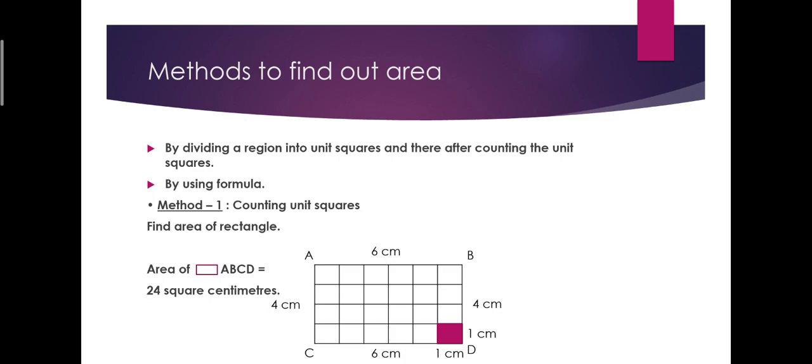Area of rectangle ABCD equals six centimeters length and four centimeters breadth. Here one unit is equal to one centimeter. Then after dividing total region into unit squares and thereafter counting the unit squares, totally the student got 24 square meters. This is method one. By counting unit squares, we have to know the area of the rectangle.